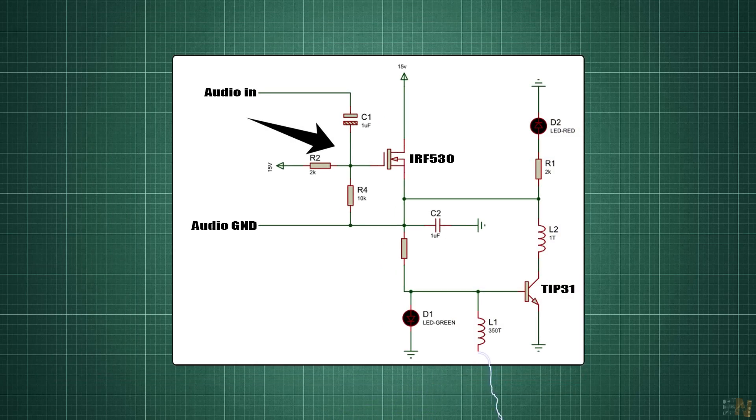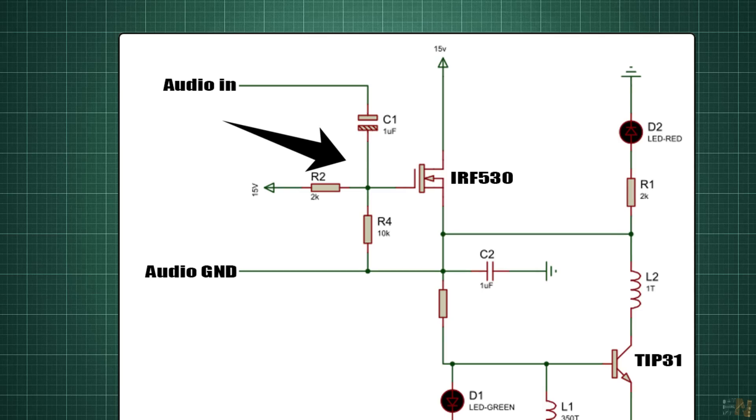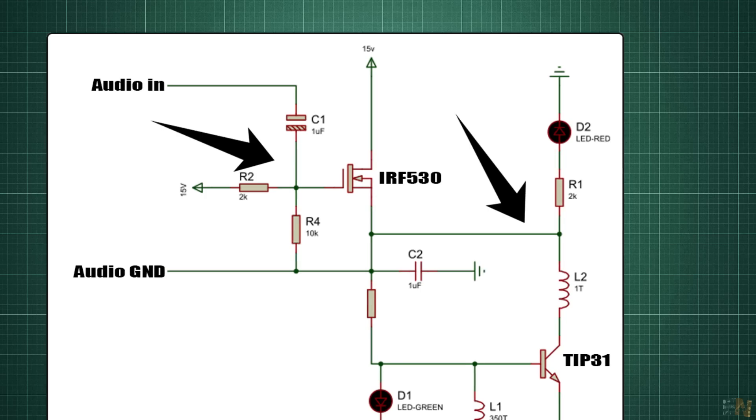But now the music signal is connected to the MOSFET gate. That will also modulate the amplitude of the voltage applied to the primary. So by that the final output voltage.